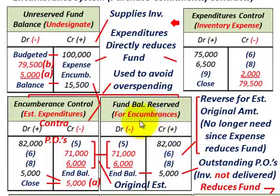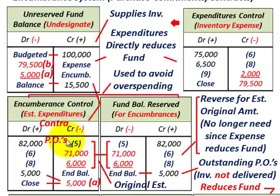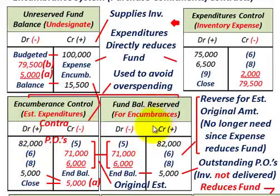The fund balance reserve account sets aside whatever we have for encumbrances — purchase orders and commitments we're going to issue. It sets aside those amounts from the unreserved fund balance. In our example, we issue purchase orders and make a commitment for $82,000. So we debit our encumbrances control account for $82,000, and we credit our fund balance reserve for encumbrances for $82,000.